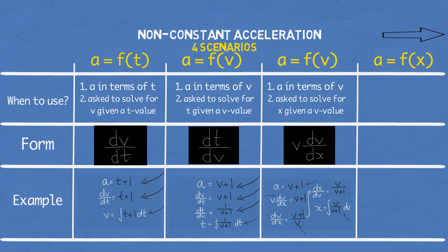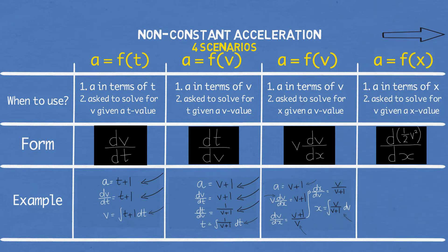And on to the last case. You use this when you are given acceleration in terms of displacement and you are asked to solve for velocity for a given displacement or position value. Similar to scenario 3, there's no mention of time at all so we cannot use dv dt or dt dv. Instead, we use acceleration equals d dx times by half v squared.